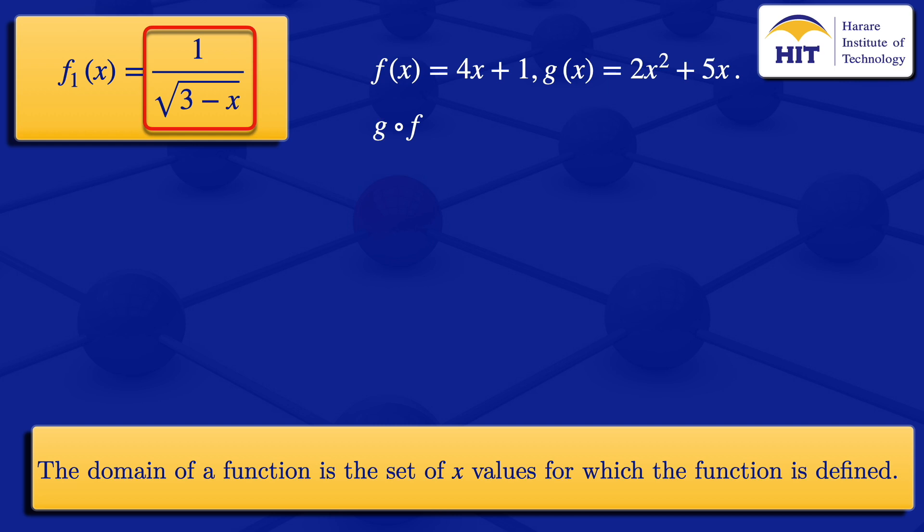The denominator is not equal to 0 if 3 minus x is not equal to 0. So if 3 minus x ≠ 0, then x is not equal to 3. If x is not equal to 3, the function would be defined. But we also need to look at what is under the square root sign.